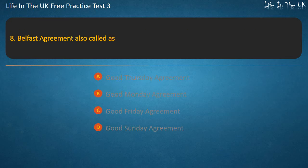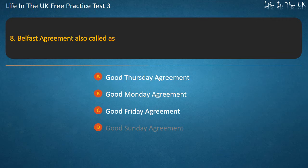Question 8. The Belfast Agreement is also called as — Good Thursday Agreement, Good Monday Agreement, Good Friday Agreement, or Good Sunday Agreement? Answer: Good Friday Agreement.